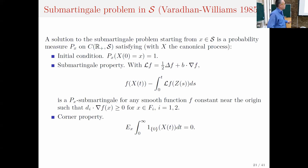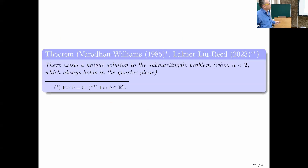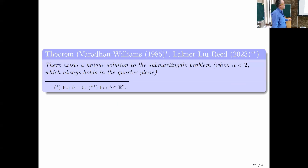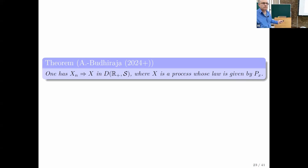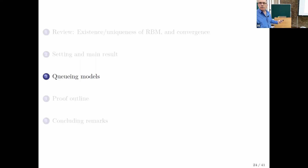The third condition is the corner property: the Lebesgue measure of the set of times when the process is at the corner is zero, almost surely. Varadhan-Williams, and then with drift, Lacker, Liu and Reed very recently, proved that there exists a unique solution to the sub-martingale problem. For general angle, it holds when alpha is less than two; since we're looking at the quarter plane, it always holds. And here is our main result: convergence of X_n to X holds in D-space, where X is the RBM defined by the sub-martingale problem with this data.